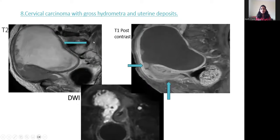Eighth case: cervical carcinoma with gross hydrometra and uterine deposits. T1-hyperintense, T2-heterogeneous cervical mass causing gross hydrometra with uterine deposits, which are also enhancing. Diffusion-weighted imaging shows restriction of the cervical mass.